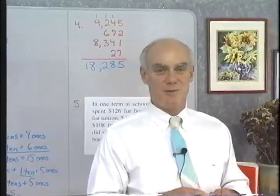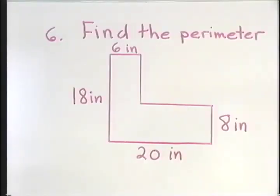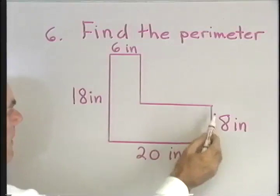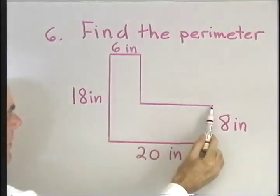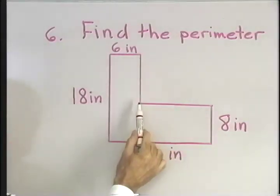Let's look at a problem that involves a little geometry. We want to find the perimeter, and I've drawn this little figure right here. The perimeter is the distance all the way around the outside, so I want to add the lengths of all these sides. Well, you see, I don't have the length of this side, and I don't have the length of this side.